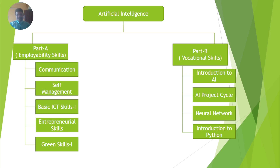You can see on our computer screen the Artificial Intelligence book name, which contains the following contents. As we are showing, one is Part A and another is Part B. Part A, which is named as Employability Skills, and Part B, which is named as Vocational Skill. You can see on the computer screen.